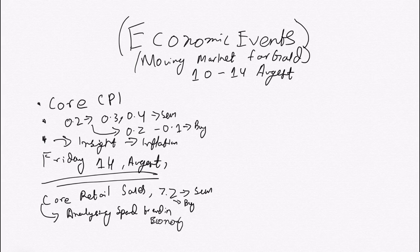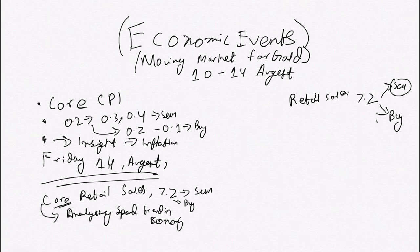Moving on, we have the Retail Sales. The previous one was Core Retail, now we have Retail Sales. The forecast value is 7.2. If we get numbers greater than 7.2, a sell signal. If we get numbers less than 7.2, a buy signal. Moreover, it's a primary gauge of consumer spending which accounts for the majority of the overall economic activity.